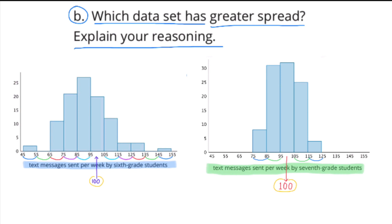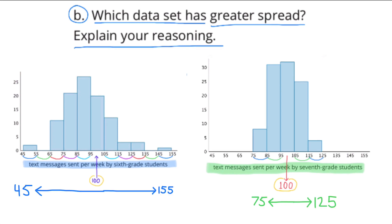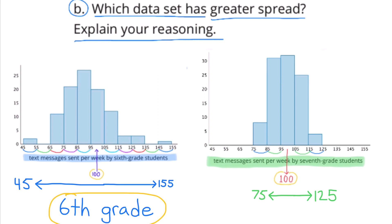Part B: Which data set has a greater spread? Explain your reasoning. The 6th grade data ranges from 45 to 155, so it has a spread from 45 to 155. The 7th grade data spreads from 75 to 125, so the 6th grade data has a greater spread.